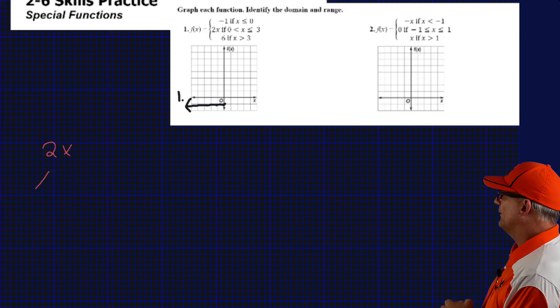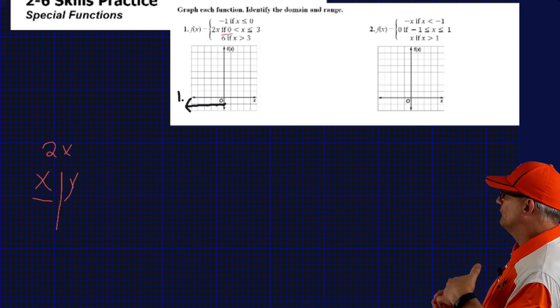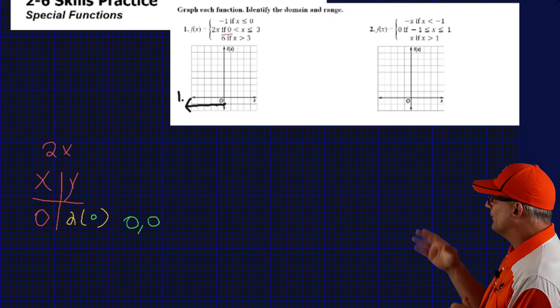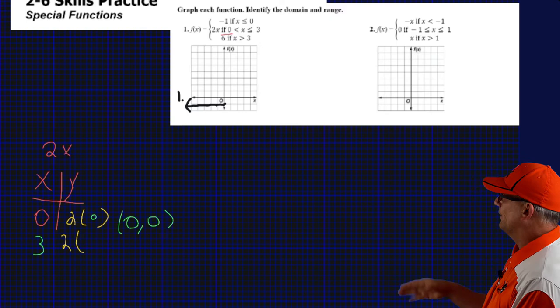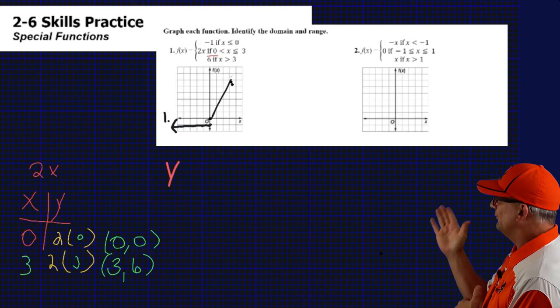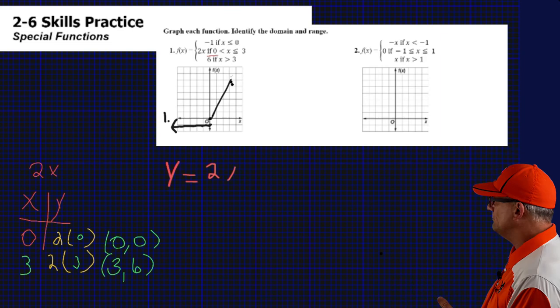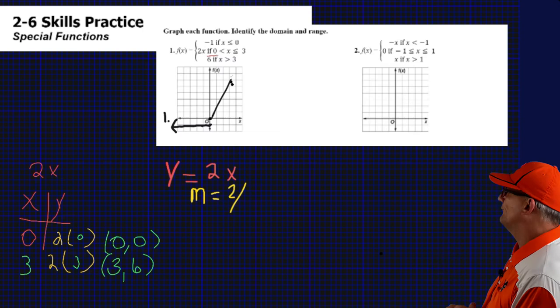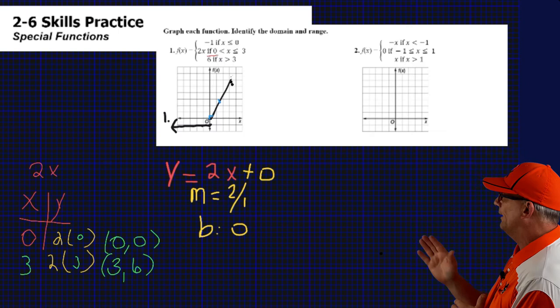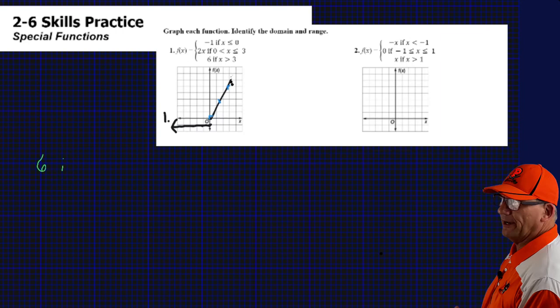Now let's take the next equation, 2x. Using a table of values, we start with 0 and end with 3 because those are the boundary points — we want to graph in between 0 and 3. We substitute in 3: 2 times 3 is 6. So we plot those two coordinates and draw our line. Using the inequality, we have an open circle at 0 and a closed circle at 3. In slope-intercept form, the slope is 2 and the y-intercept is 0 — up 2 over 1 — giving the exact same line.